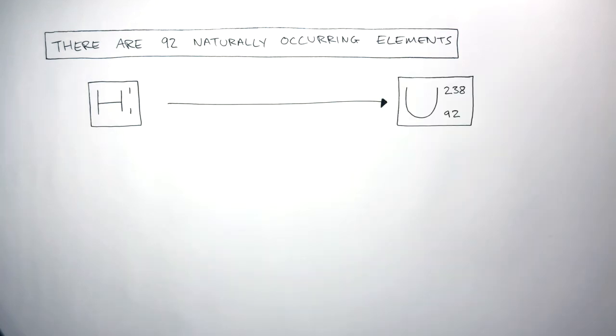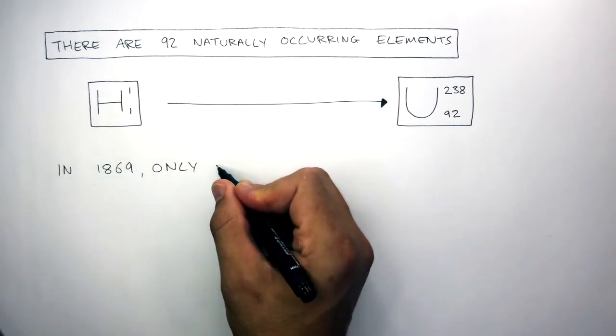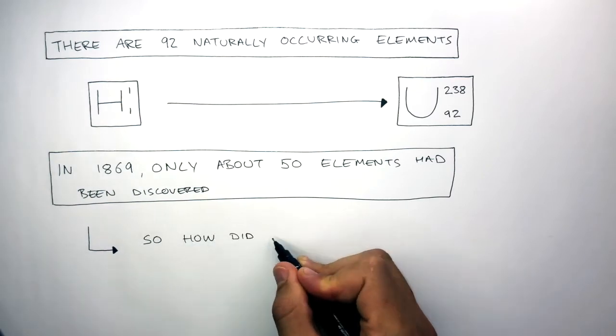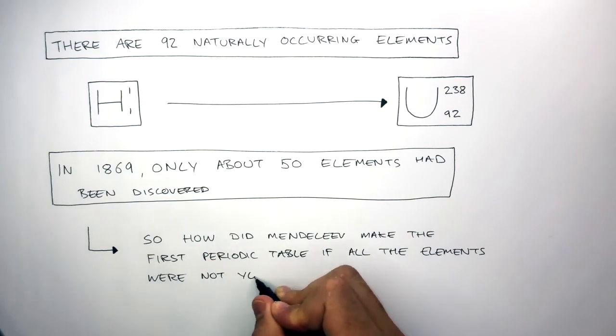We haven't always known about the existence of every element because in 1869 only about 50 of the elements had been discovered. So how did Mendeleev make the first periodic table if all the elements were not yet discovered?